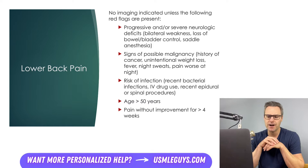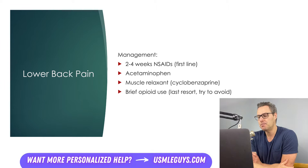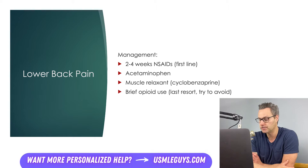Finally, if after conservative management the patient shows no improvement after that four to six week time period, then imaging would be warranted. Non-urgent back pain typically warrants conservative management. The first line treatment would be NSAIDs for two to four weeks. If that's not effective, then acetaminophen, muscle relaxants, or as a last resort, a very brief course of opioids could be considered. But NSAIDs are always going to be your first line.